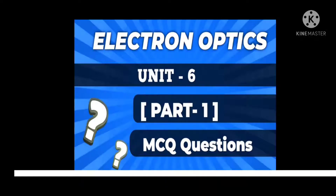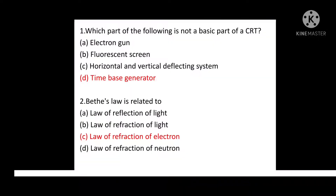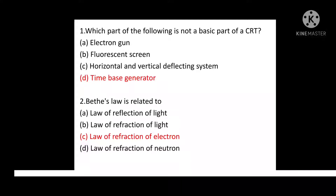First question: Which of the following is not a basic part of CRT? Option A: Electron Gun. Option B: Fluorescent Screen. Option C: Horizontal and Vertical Deflecting System. Option D: Time Base Generator. Correct answer is Option D: Time Base Generator.